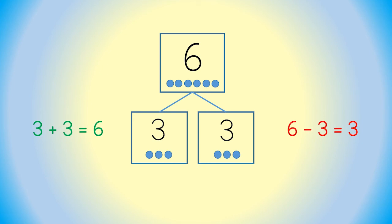So this number bond has only 2 number sentences. This is because the 2 parts that make 6 are both the same, 3 and 3.